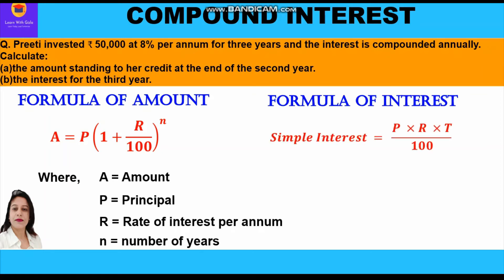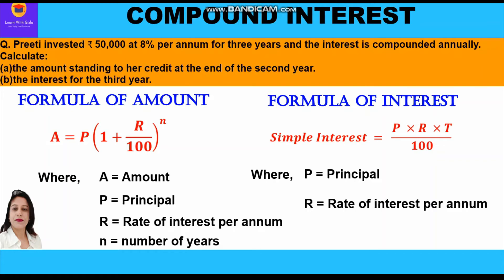We are going to use the simple interest formula to calculate the interest, because we are calculating the interest only for one year — the third year. The simple interest formula is: SI = (P × r × t) / 100, where P is the principal, r is the rate of interest per annum, and t is the time period.